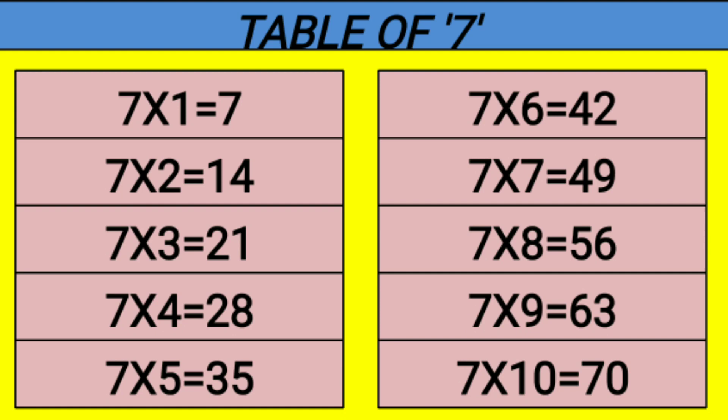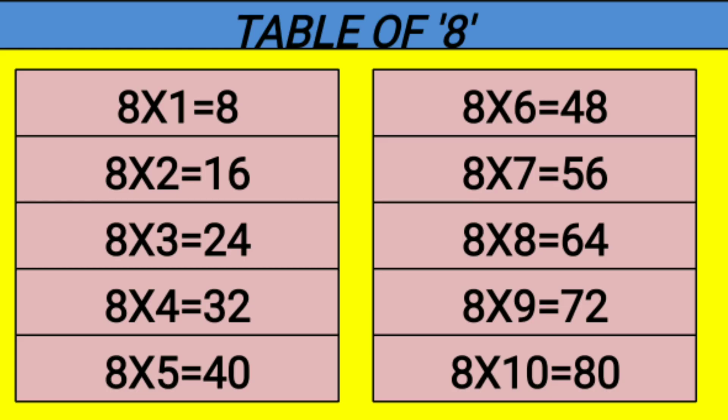7 6s are 42, 7 7s are 49, 7 8s are 56, 7 9s are 63, 7 10s are 70.